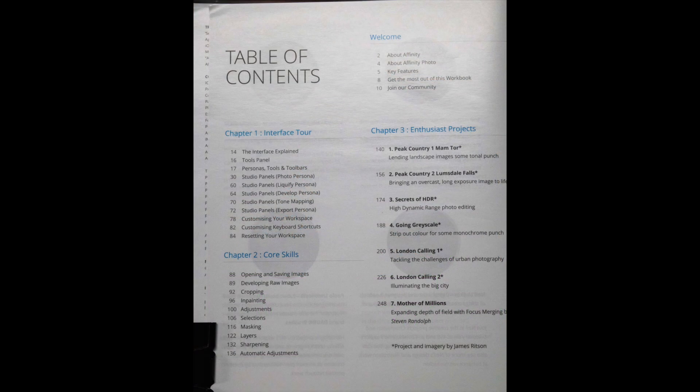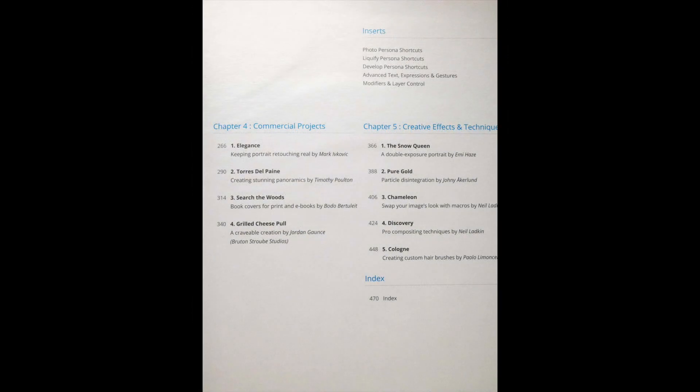Here's a table of contents for the first three chapters. Chapter 1 is an interface tour. Chapter 2 covers the core skills you need to use Affinity Photo. Chapter 3 covers enthusiast projects. Chapter 4 covers commercial projects, and Chapter 5 covers creative effects and techniques. These are much more advanced projects than Chapters 1, 2, and 3.